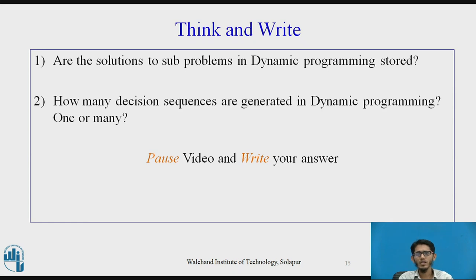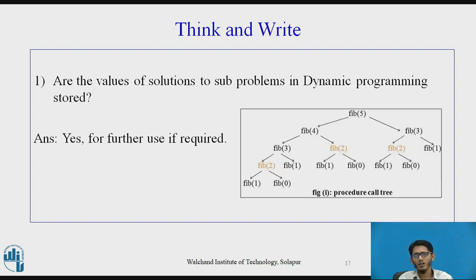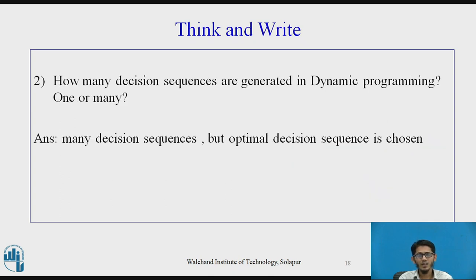Students are expected to answer: First, are solutions to sub-problems in dynamic programming stored? Yes — they are stored for further use, as seen in the Fibonacci example where fib(2) would otherwise be recalculated 3 times. Second, how many decision sequences are generated in dynamic programming — one or many? The answer is many, but the optimal decision sequence is chosen to give the optimal solution.